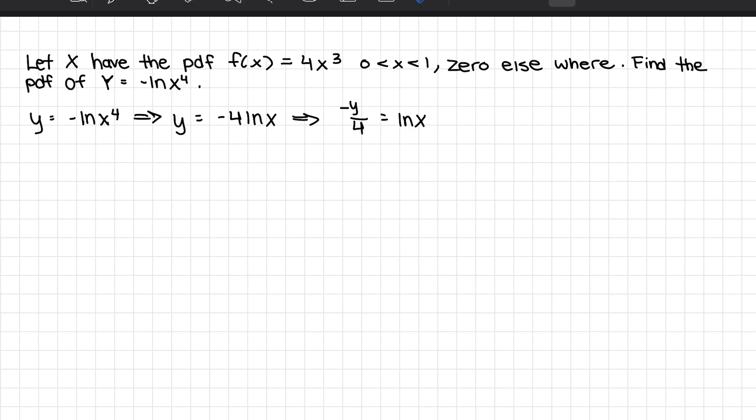I just take the 4 and bring it down to this side. And now I'm going to make this equal to e to the negative y over 4 equals x. And this is now our inverse. Our inverse just means that we want to take our given function and set it to where x is equal to something with y.